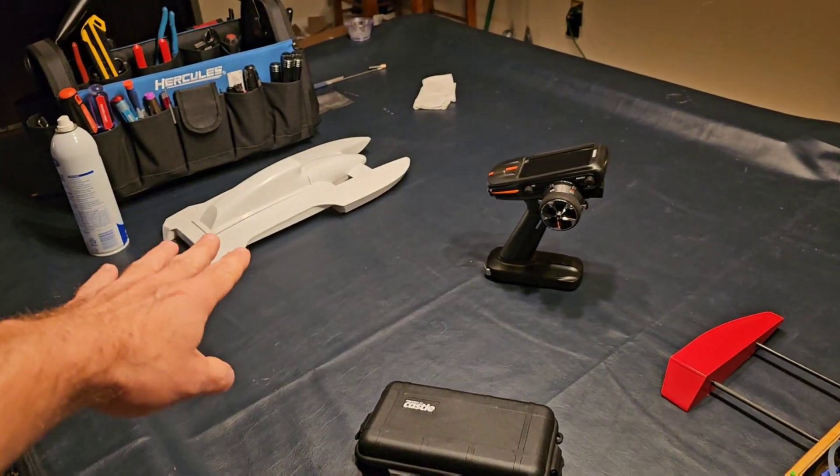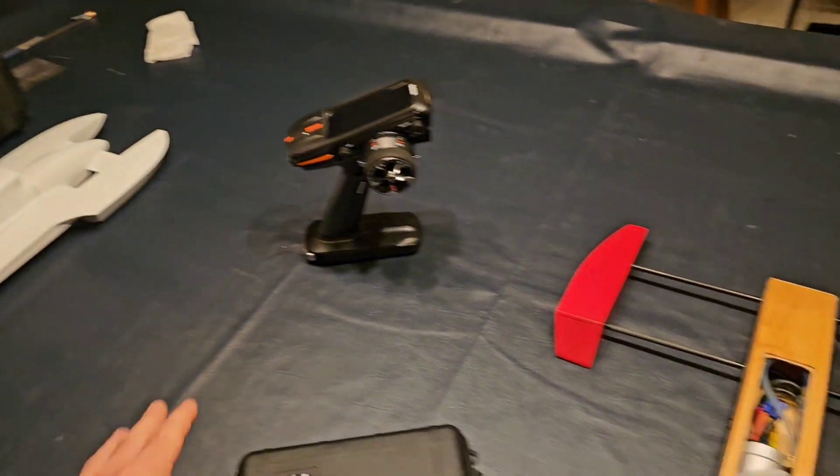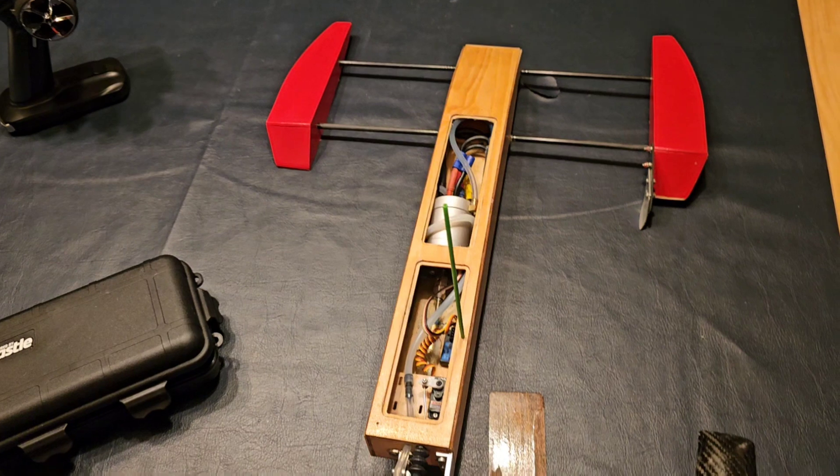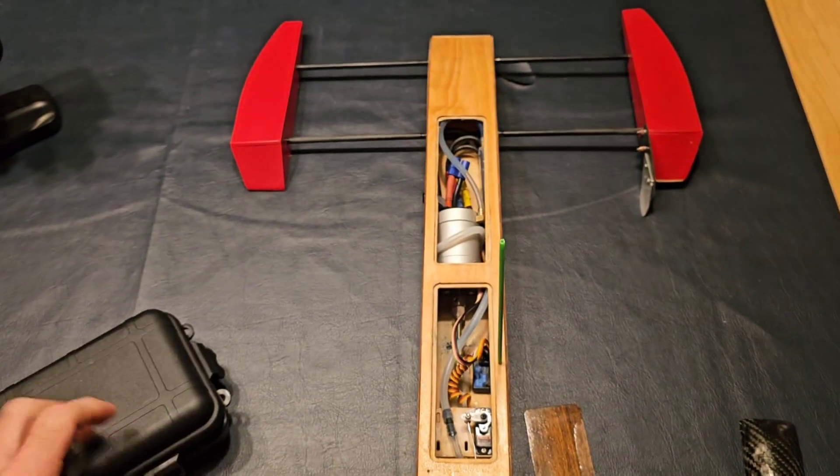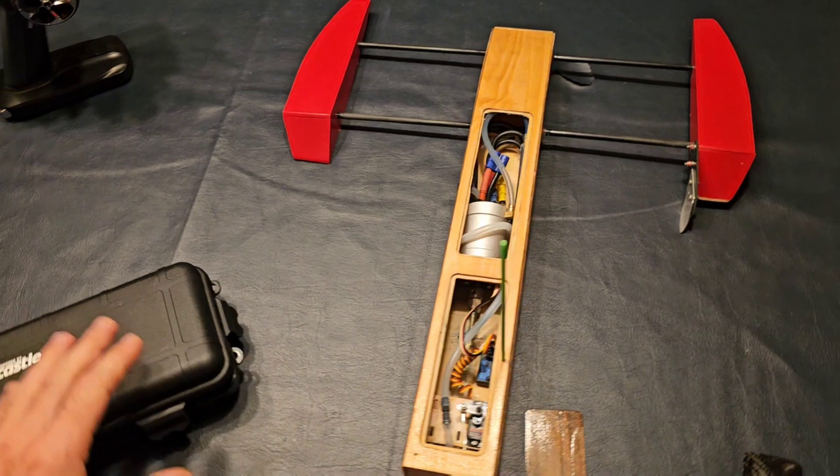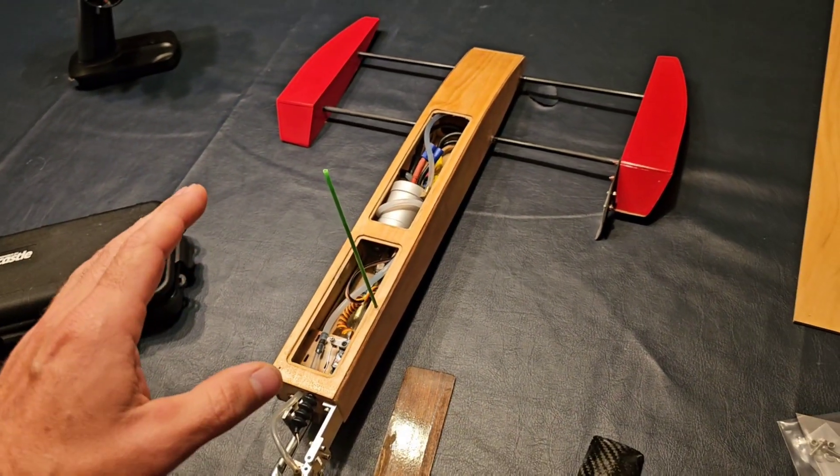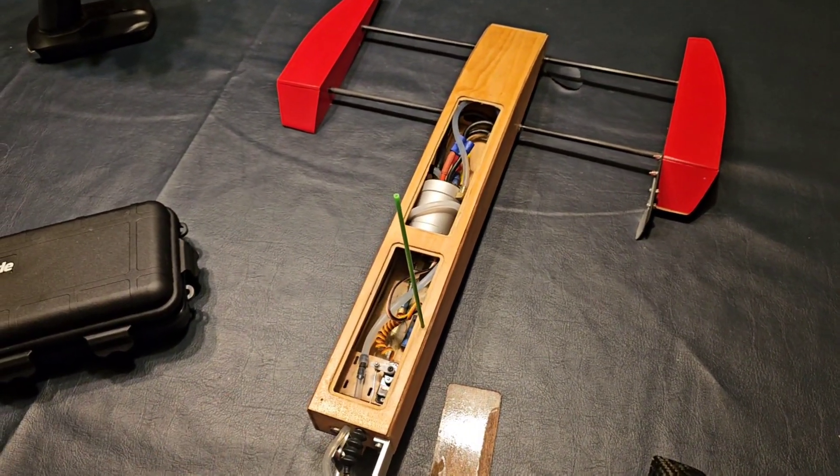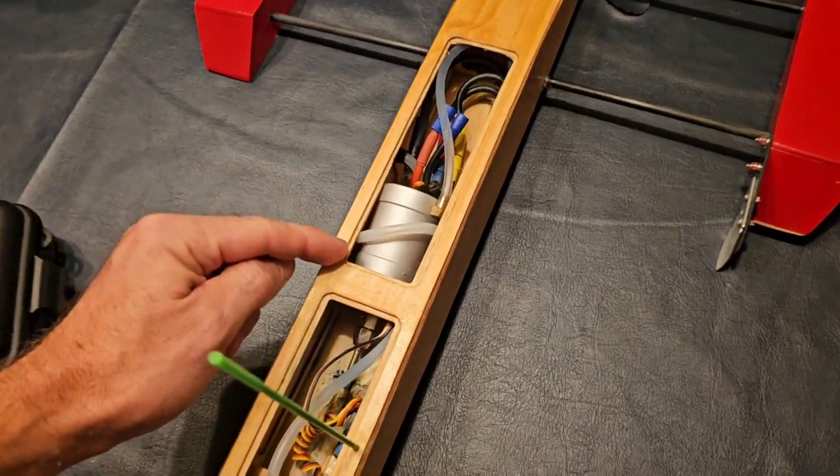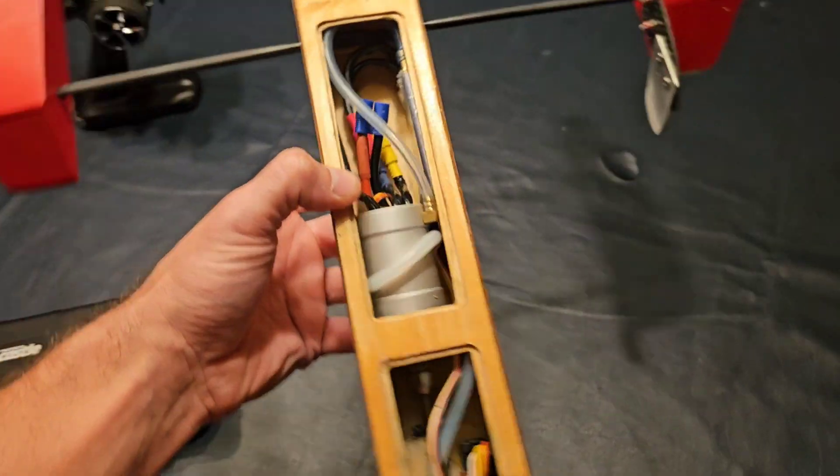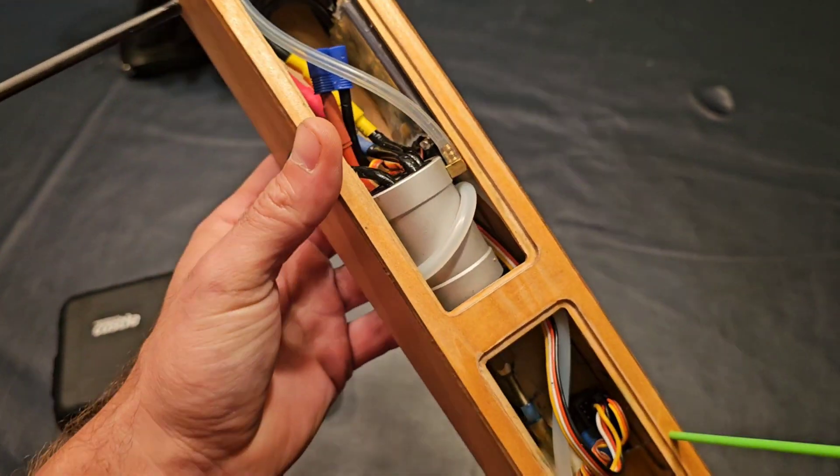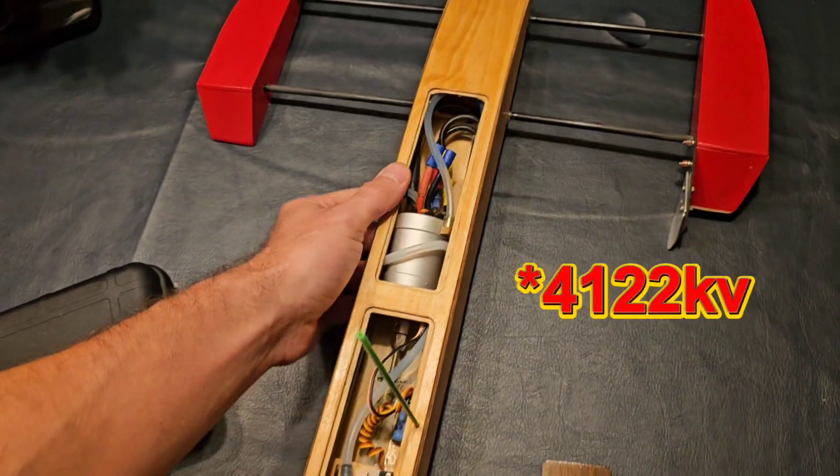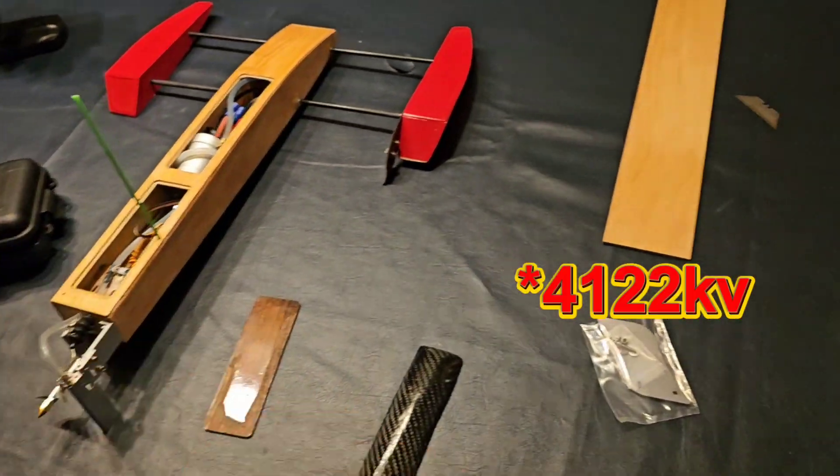While I'm waiting for parts for that boat to arrive, I figured I'm going to make some changes on the shrimp rigger here. We've done multiple different passes with this boat and achieved a top speed of 75 miles an hour. The motor currently in here is an SSS 2960, around 2220 KV.